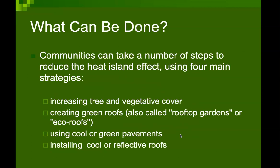So what can be done? Communities can take a number of steps to reduce the heat island effect using four main strategies. First is increasing tree and vegetative cover over open areas available in and around neighborhoods or along roads. Second, creating green roofs — also called rooftop gardens. Third, using cool and permeable paving blocks. Fourth, installing cool and reflective roofs.